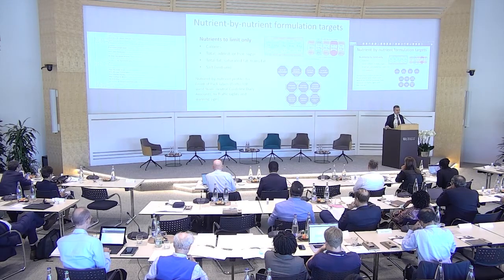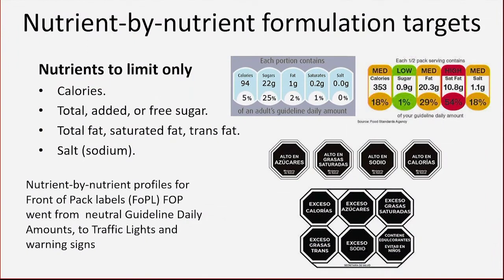You've all seen the guideline daily amounts. They started with calories, sugar, fat and so on. About six or seven years ago all nutrients were the same color — equal. Then they became traffic lights: green, amber, and red. Then they became big black warning signs in Chile and now in Mexico, looking at calories, saturated fat, sugar, and sodium. In Mexico they also address low-calorie sweeteners. These are warning signs focusing on problematic nutrients.